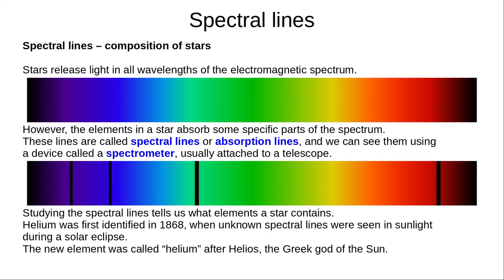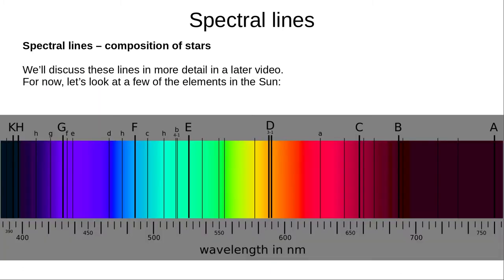Helium was first identified in 1868, when unknown spectral lines were seen in sunlight during an eclipse. The new element was named Helium, after Helios, the Greek god of the Sun. We'll discuss these lines more in a later video on starlight.